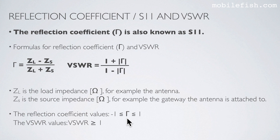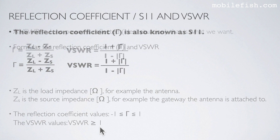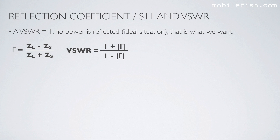The reflection coefficient values are between minus 1 and 1, and the VSWR values are always greater than or equal to 1. A VSWR value of 1 means no power is reflected — this is the ideal situation. To get a VSWR of 1, the reflection coefficient should be 0, which means the load impedance and the source impedance must be the same. This is what I have explained in tutorial 32.